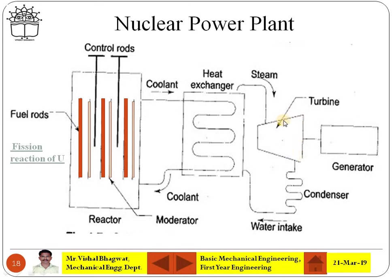The steam has very high temperature and high pressure. When it is blown over the turbine, the turbine shaft will rotate and the rotation of the shaft is coupled to the generator, which produces electricity that is supplied to the power grids.